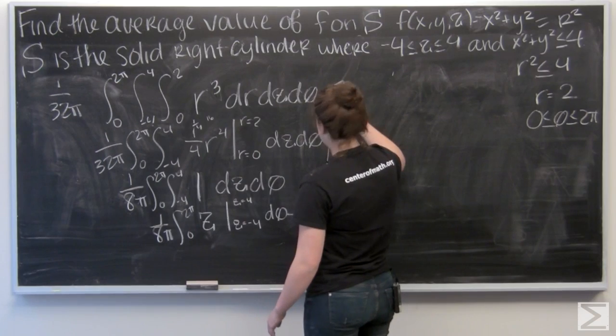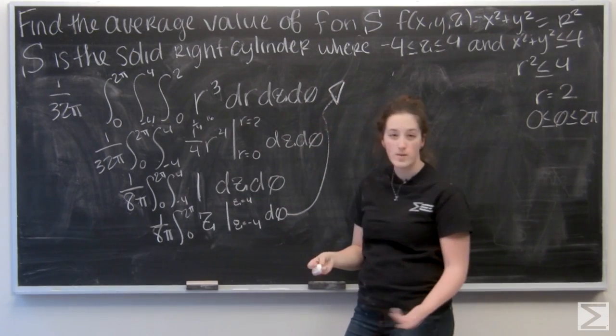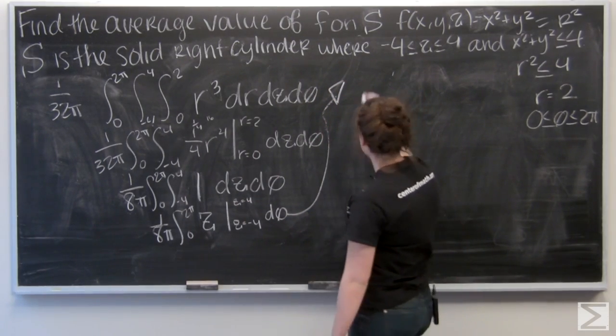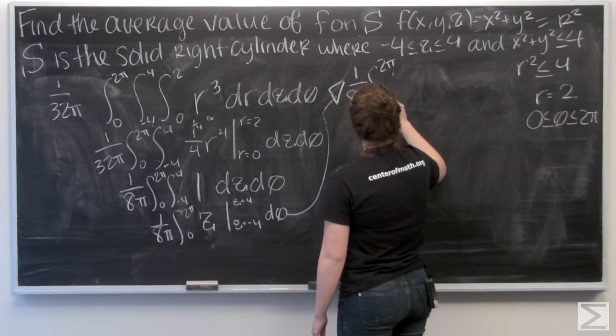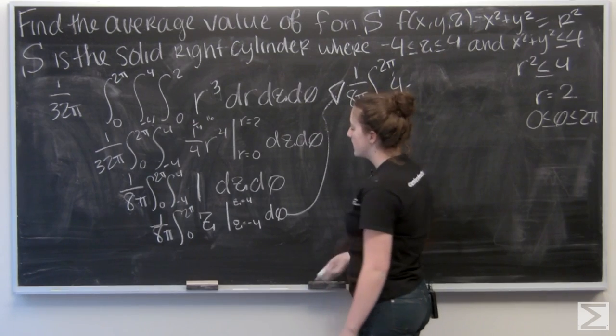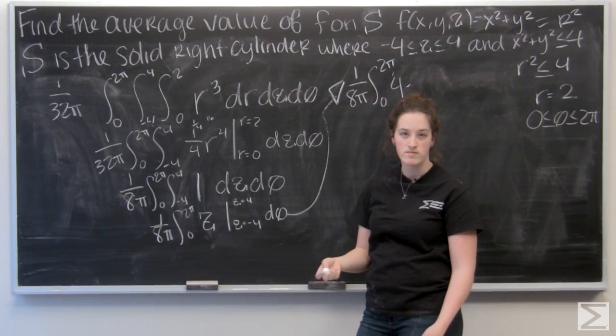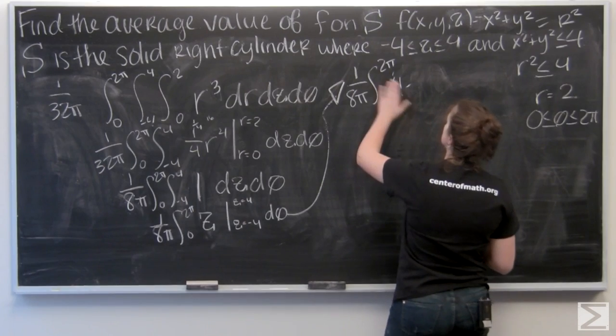Let me move up here to do that. So I plug in 4 and I get 4. And then I want to subtract negative 4, which is like adding 4, which is going to give me 8 in here.